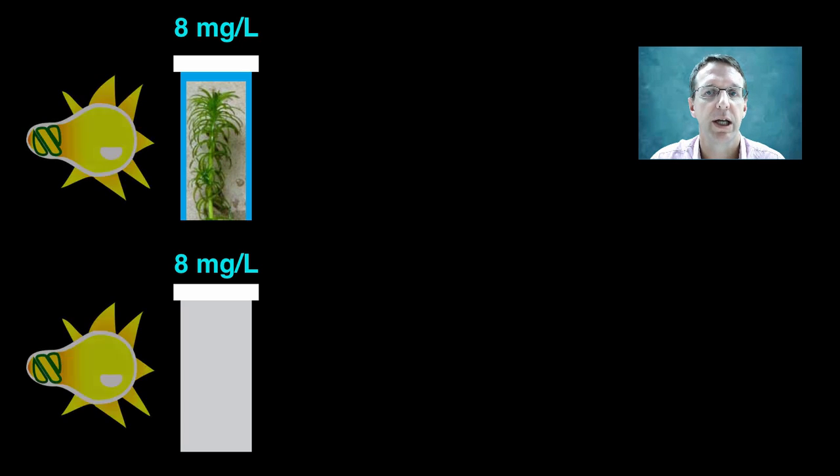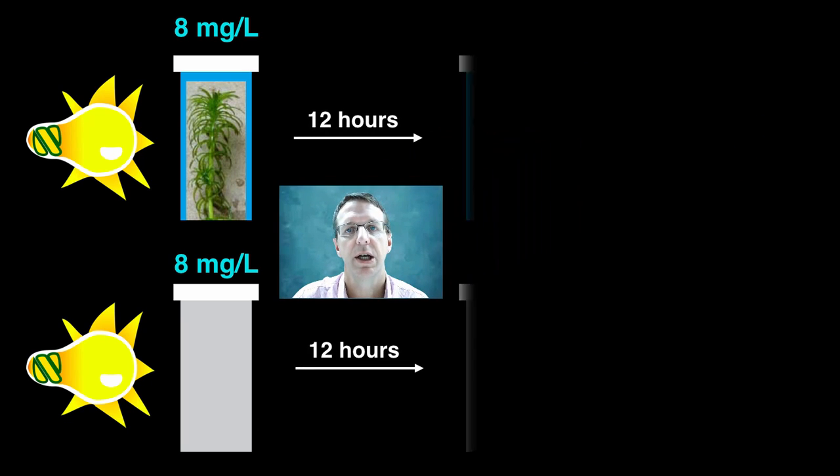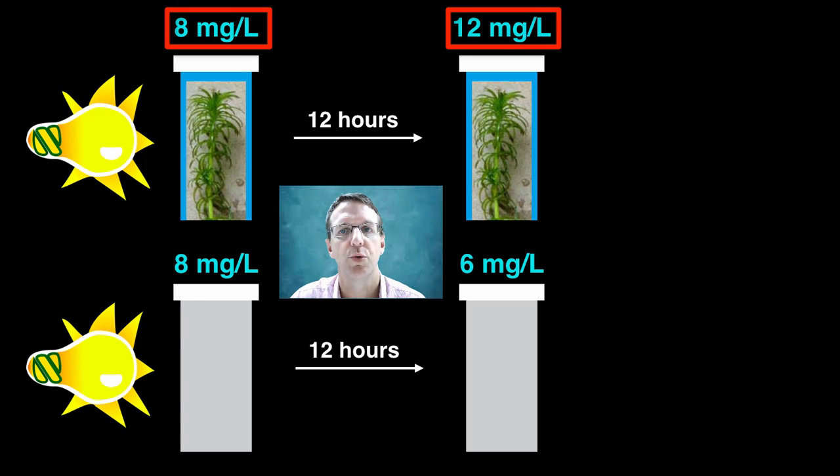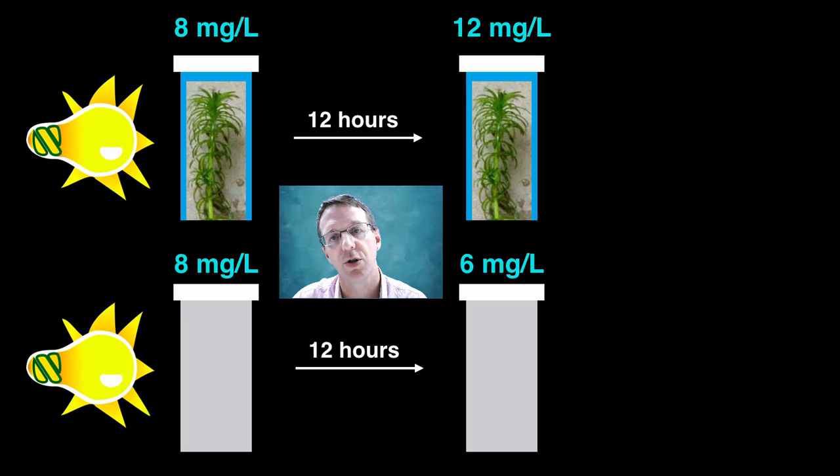Now, we shine a light on the containers for a period of time to allow for photosynthesis in the uncovered tube. After the incubation period, it's time to test the DO levels again, and you would expect a decrease in the tube in the dark, as plants take in oxygen for respiration. And an increase in the tube in the light, due to a greater rate of oxygen release from photosynthesis compared to the oxygen consumption from respiration.